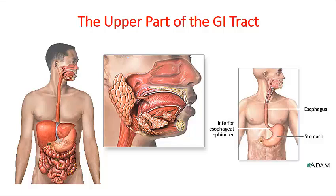Now let's talk about the upper part of the gastrointestinal tract. The upper GI tract is involved with the process of ingestion — it starts with the mouth and ends at the end of the stomach. Food ingestion begins in the mouth, where chemical digestion takes place through saliva containing alpha-amylase enzyme, which breaks down starch and sugars.